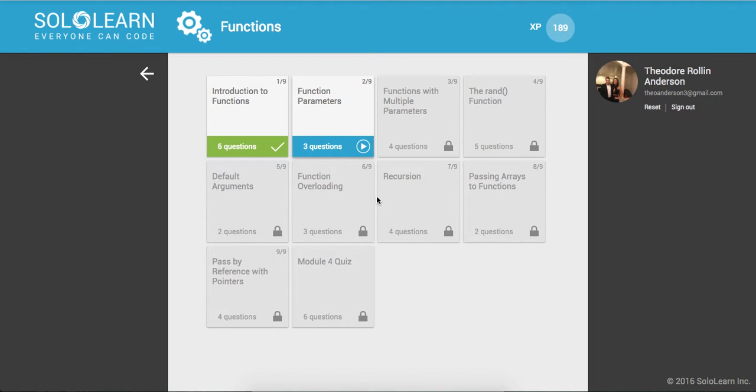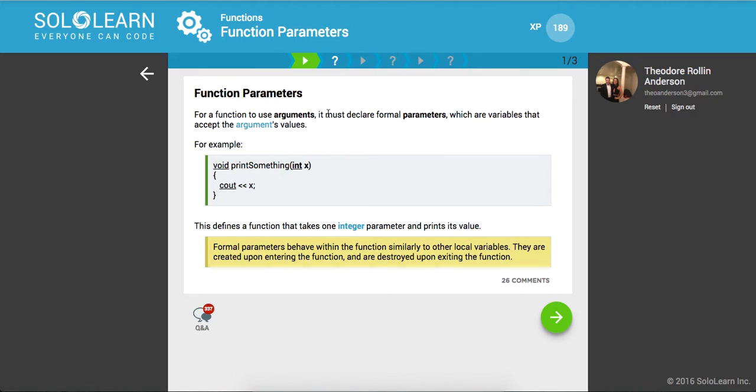Yo what's up guys, this is Theo here, welcome back to part 31 of introduction to C++ programming. We're on function parameters. For a function to use arguments, it must declare formal parameters, which are variables that accept the arguments values.